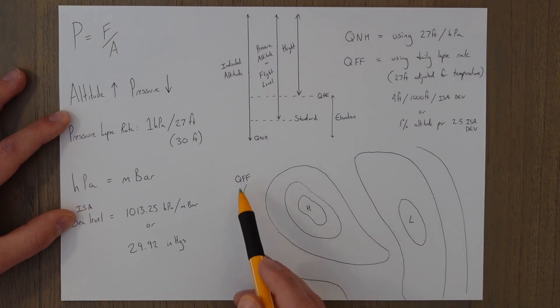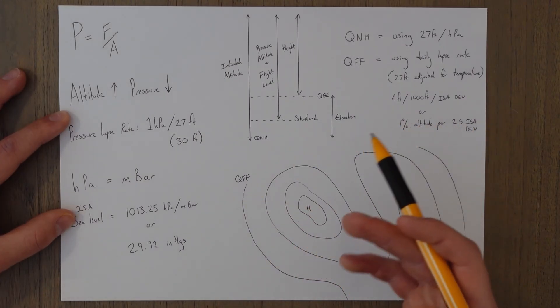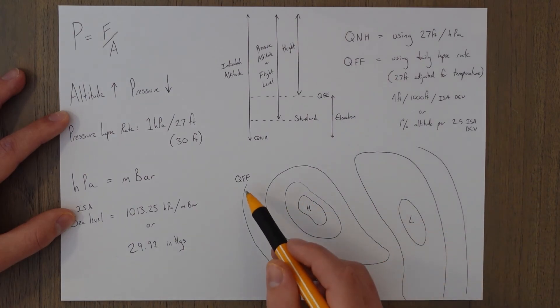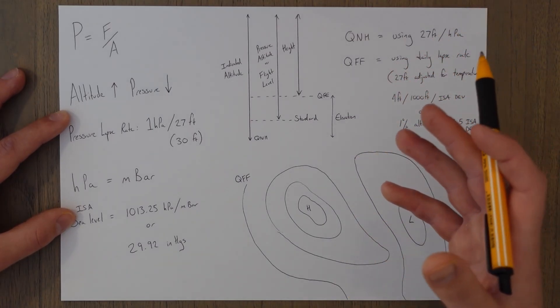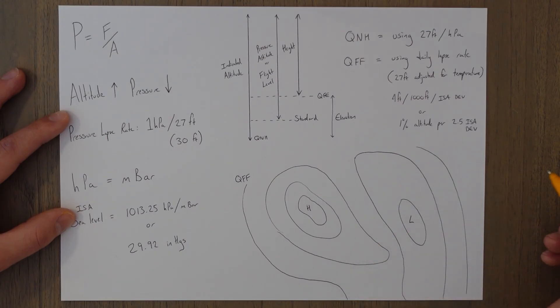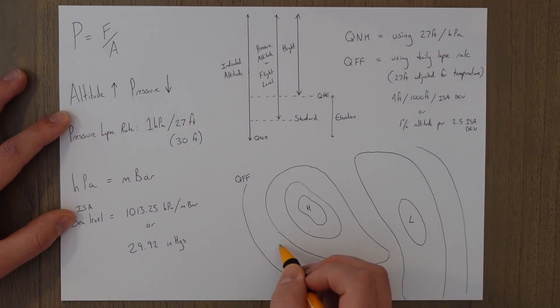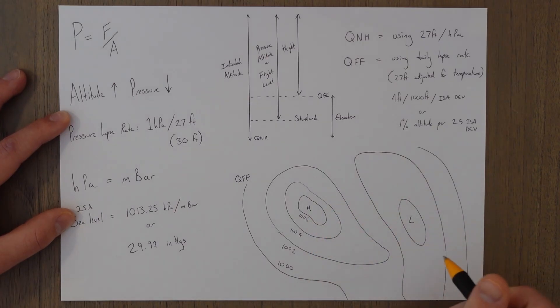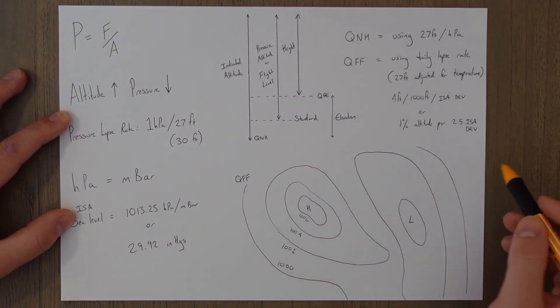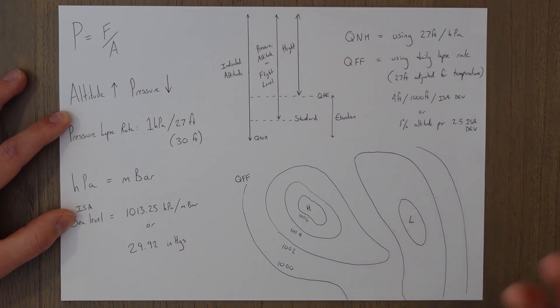And then we have isobar charts which use the QFF, which is the equivalent sea level pressure or the actual measured sea level pressure, and the isobars all have equal pressure. Iso meaning the same, I believe, so isobar same bar lines. But yeah, they're all the same pressure and there's usually about two or a four hectopascal difference between them. So that'll be 1000, this would be 1002, 1004, and this would be 1006, which is actually not a very high pressure. But yeah, and we use the isobar charts to help predict weather which we'll look at in future.